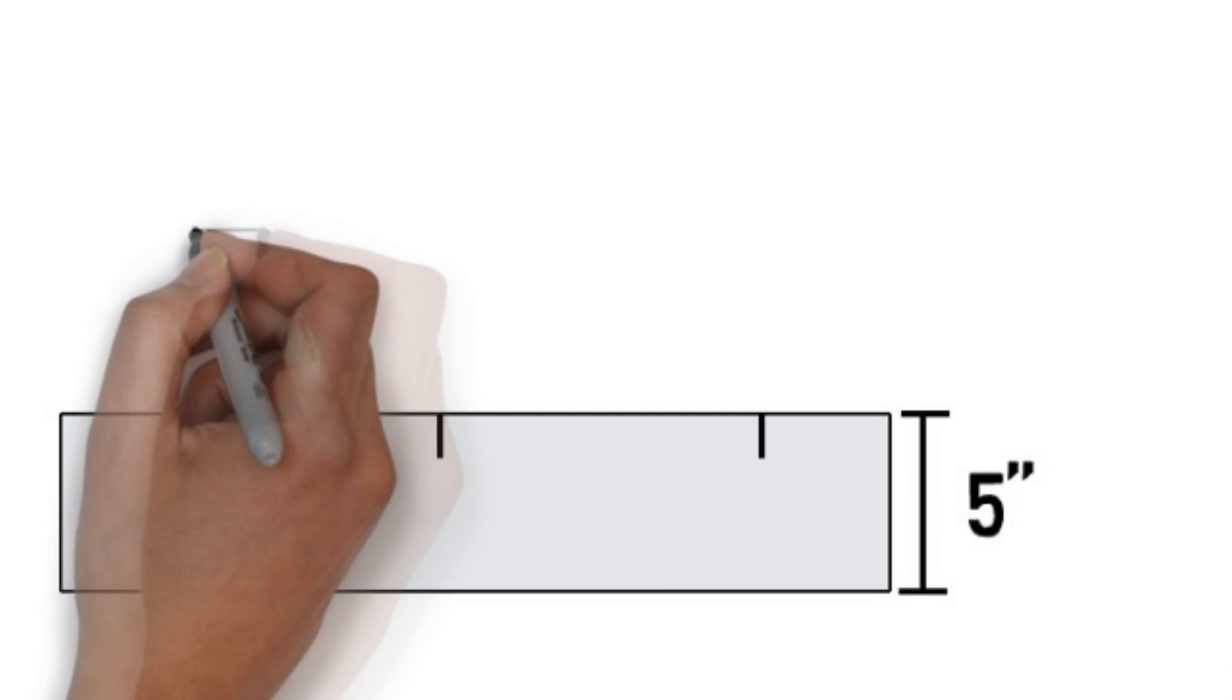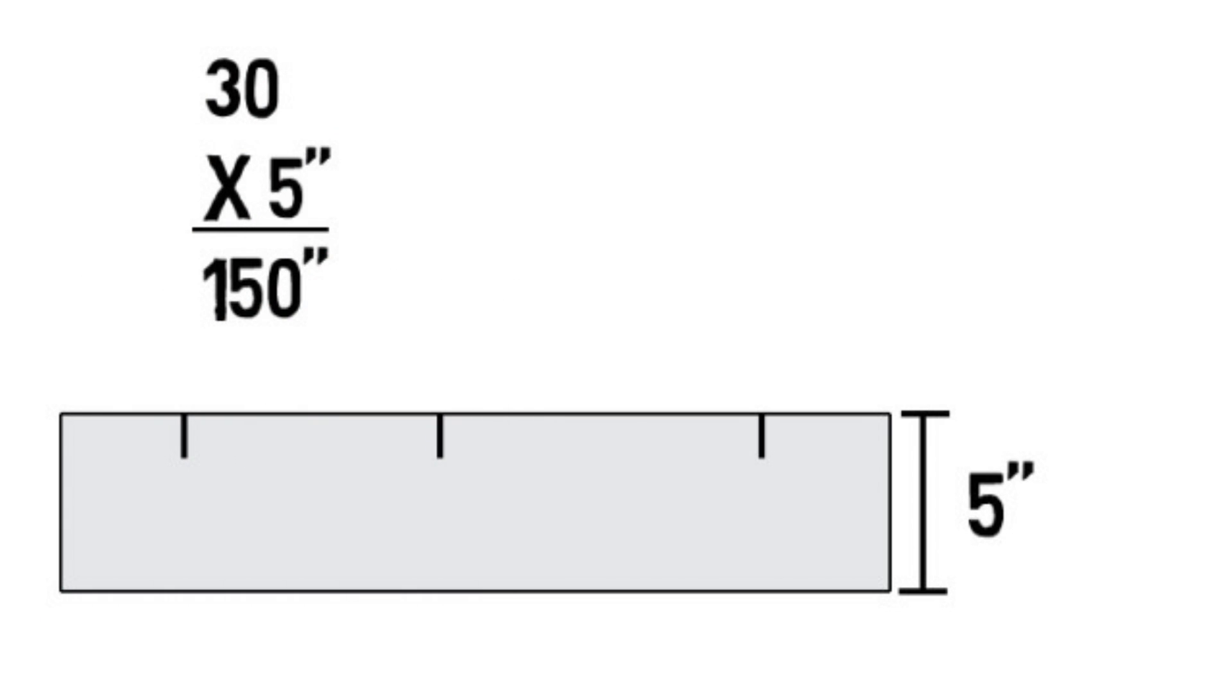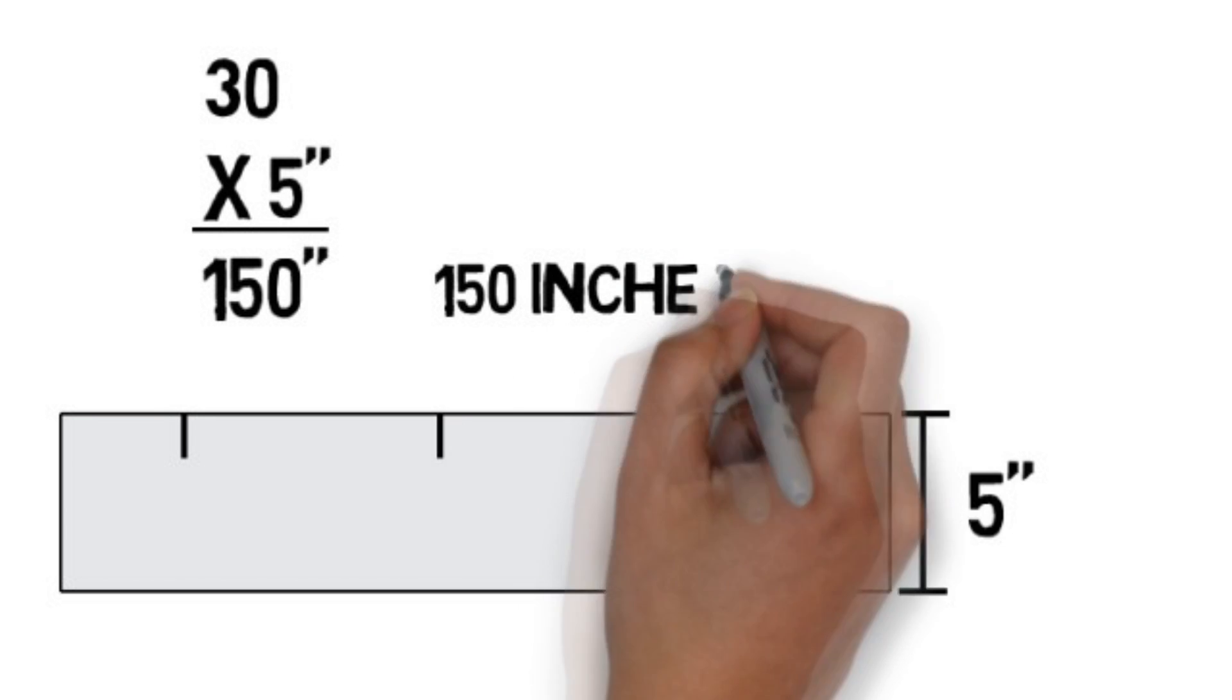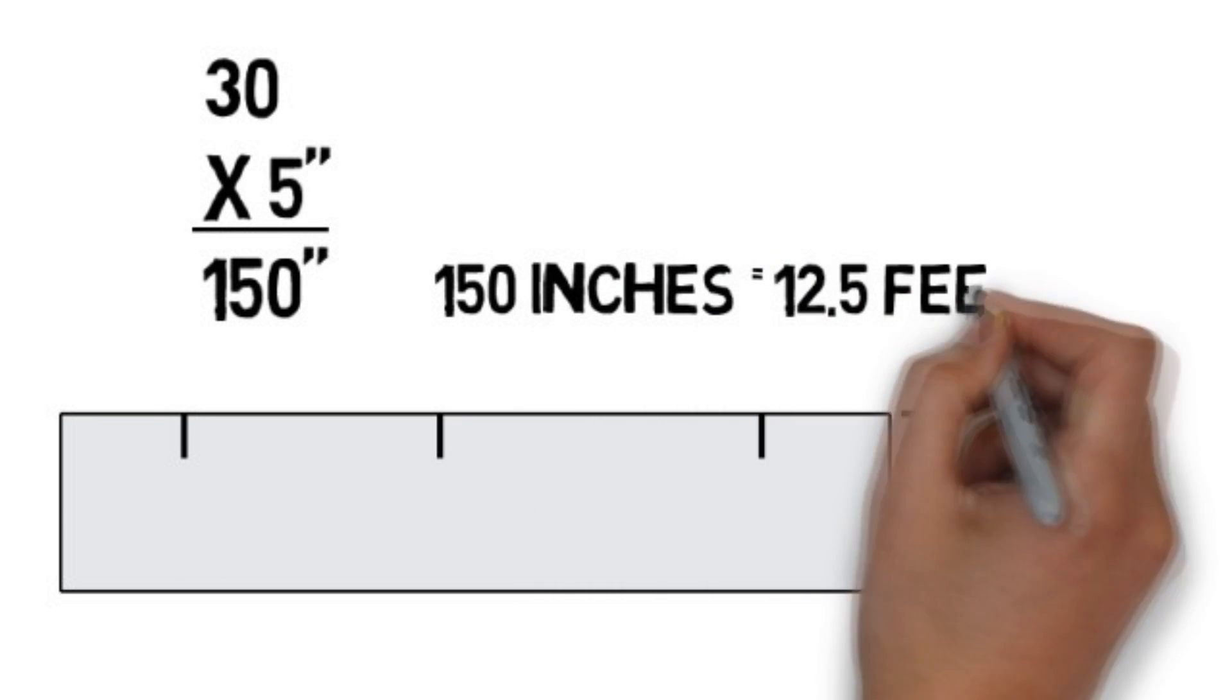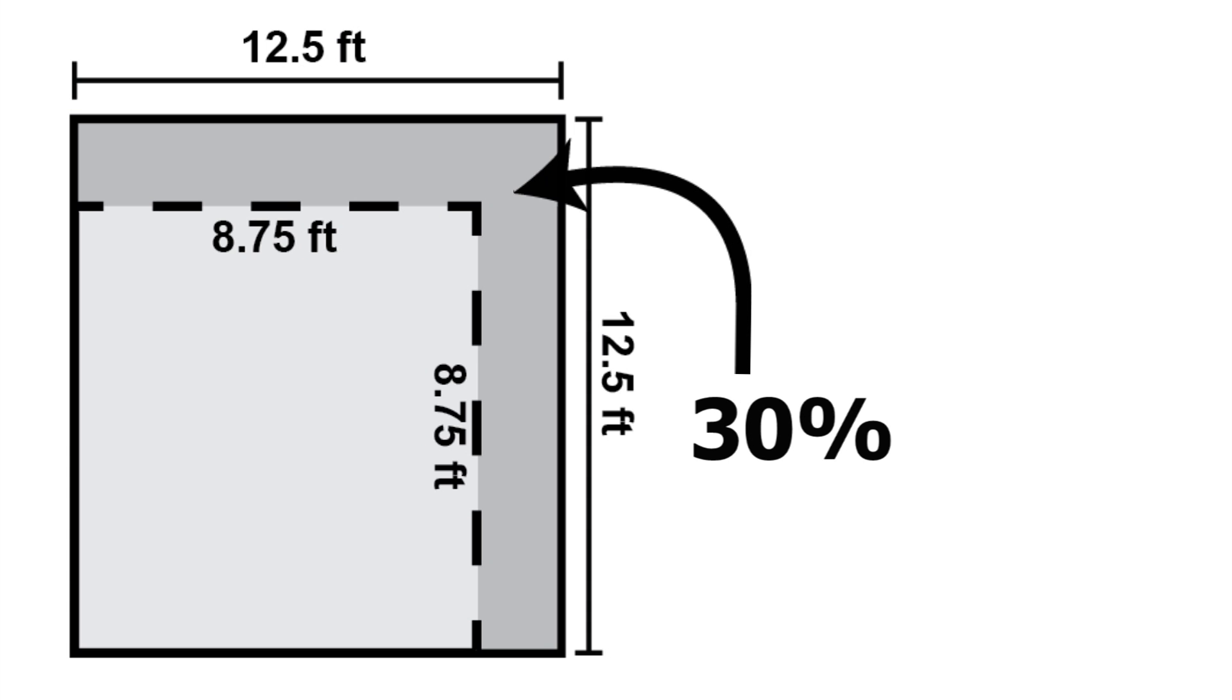Joint spacing is determined by slab thickness. Generally, the smaller the joint spacing, the better. Maximum spacing is based on the slab thickness and should not exceed 30 times the slab thickness. Recommended spacing is about 30% closer if possible.